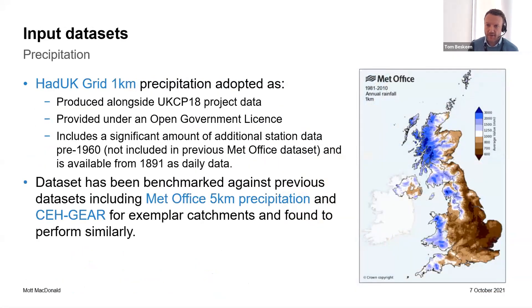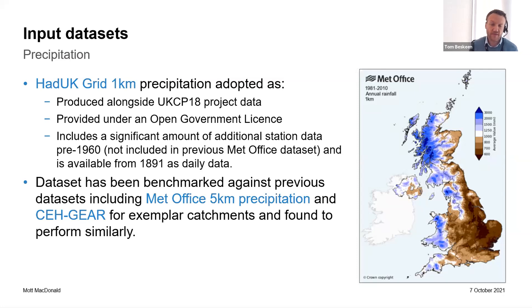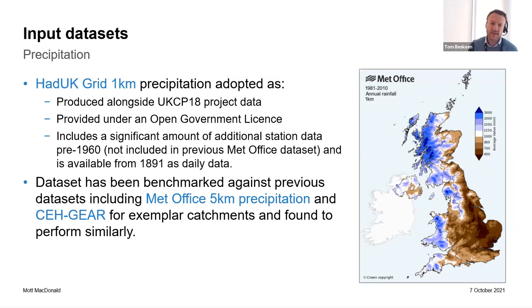Just to talk about the input datasets — I won't talk too much about precipitation. There is, as some of you will be aware, a relatively new gridded dataset available from HadUK, which provides precipitation on a one-kilometre grid available across the whole country from 1891 to effectively to date, with the latest release being in 2020. As part of some of the early work, we did some benchmarking of this dataset and found that it performed very similarly to other datasets that were in use previously.